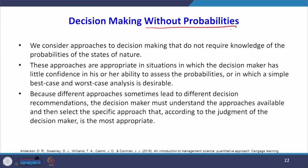We consider approaches to decision making that do not require knowledge of probabilities of the states of nature. These approaches are appropriate in situations where the decision maker has little confidence in assessing probabilities, or where a simple best-case or worst-case analysis is desirable. Because different approaches sometimes lead to different decision recommendations, the decision maker must understand the approaches available and then select the most appropriate one.